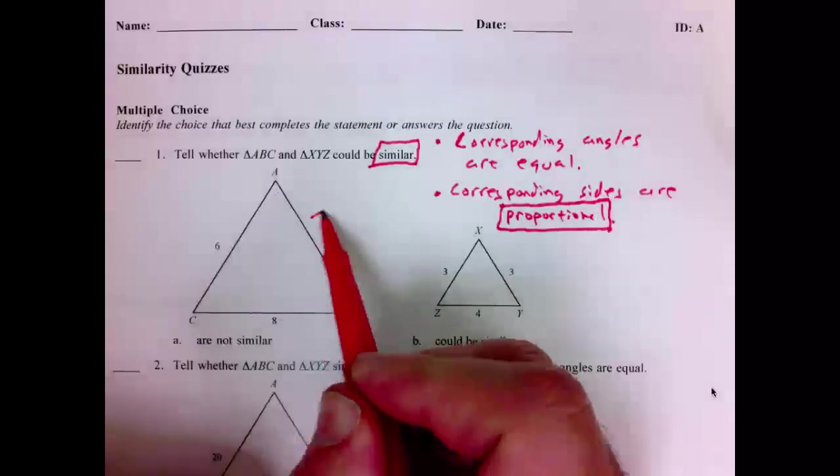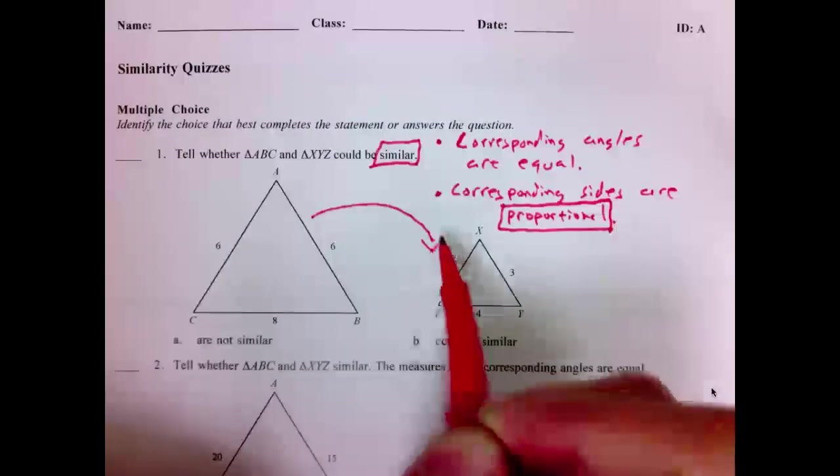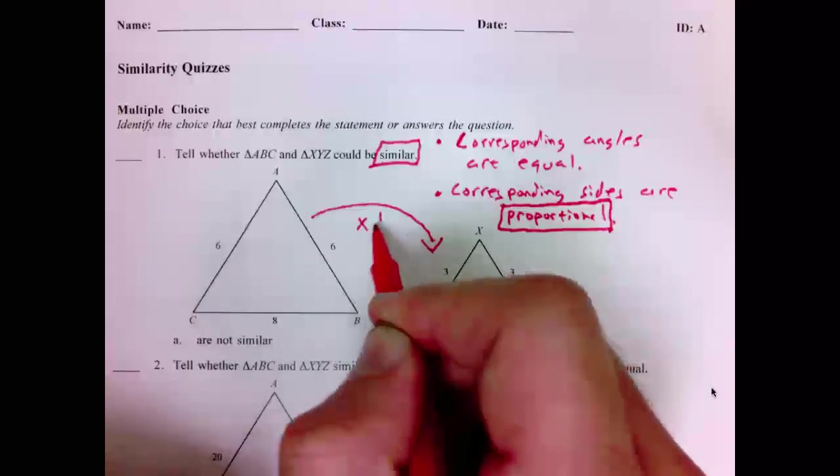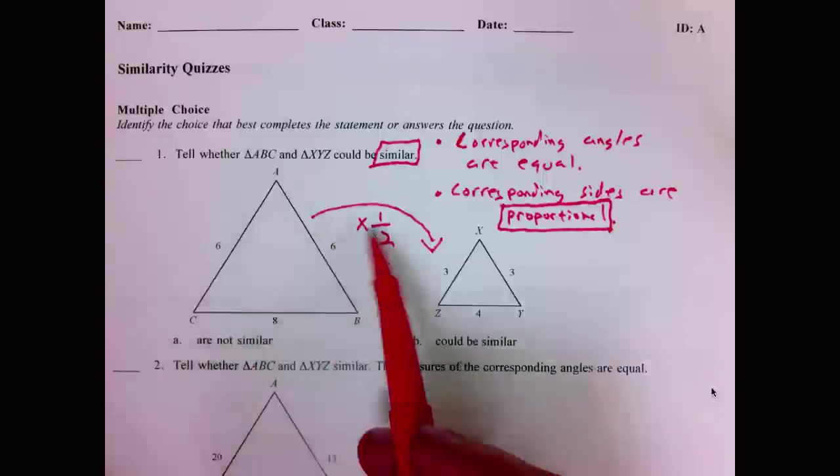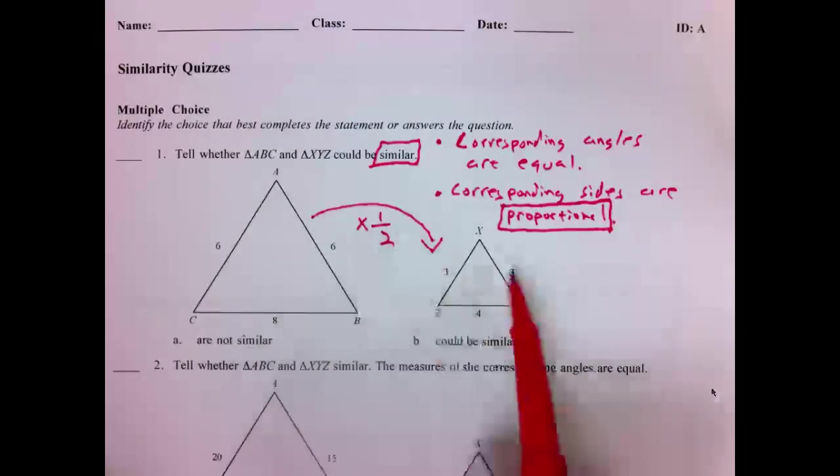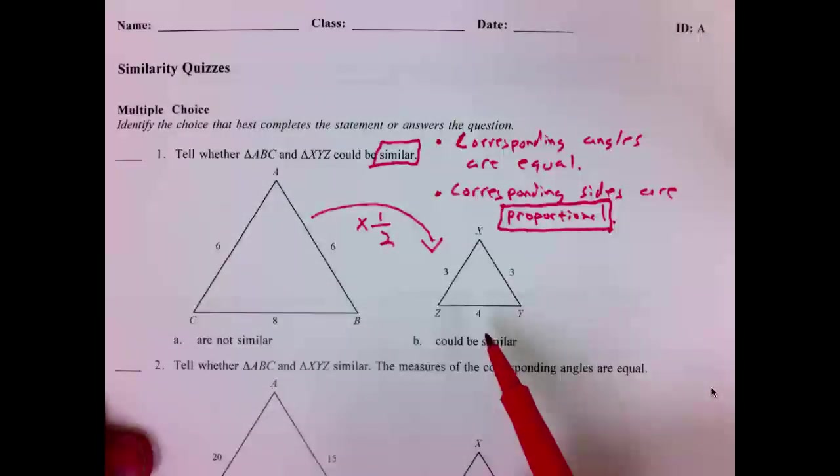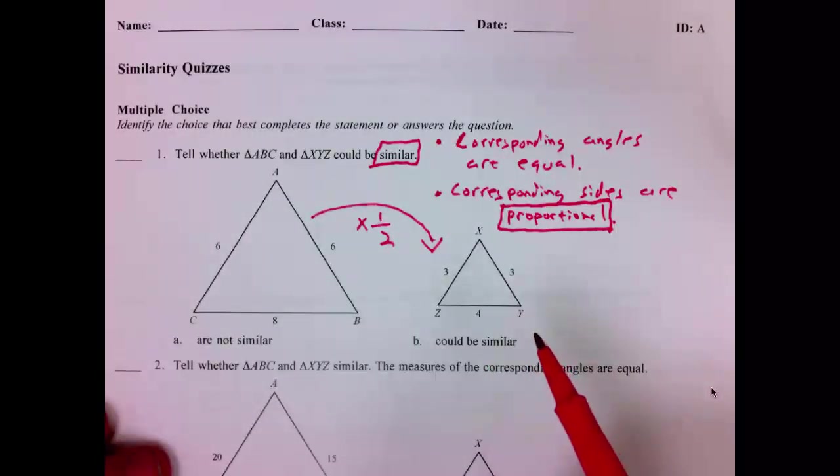If you took this figure here and multiplied by a scale factor of one half, you would get all of these values. Six times one half is three. Six times one half is three. Eight times one half is four. Since they all have that same multiplier, these are indeed similar.